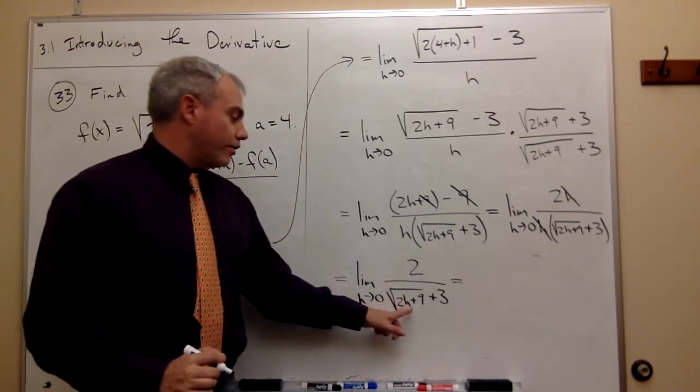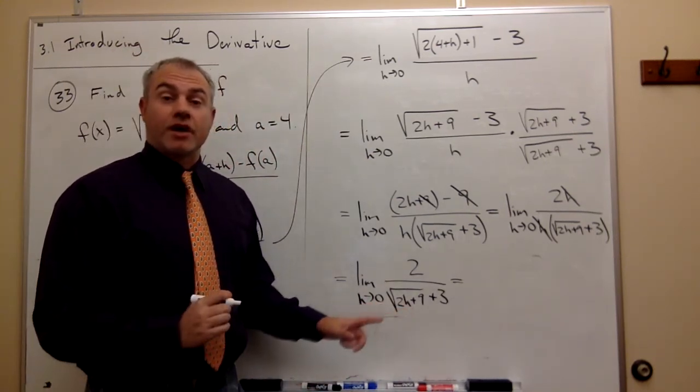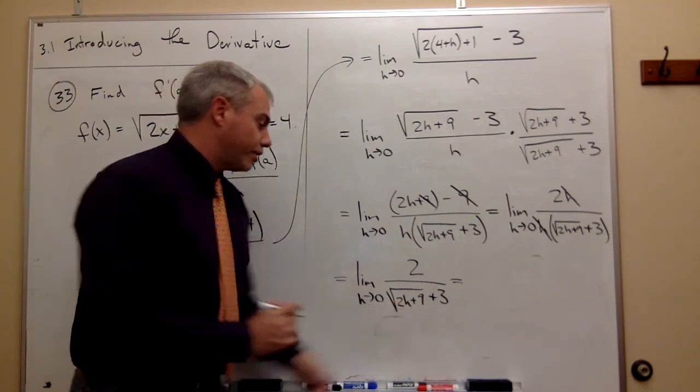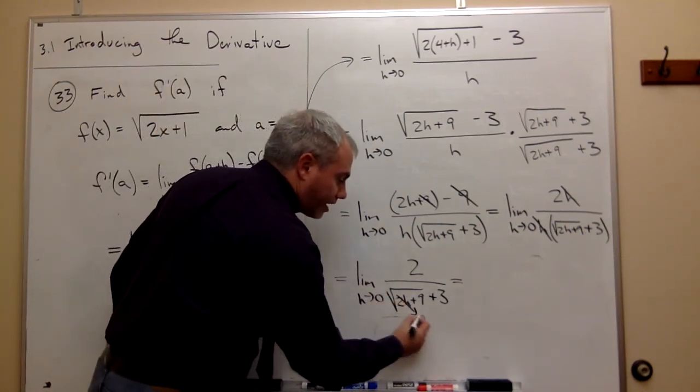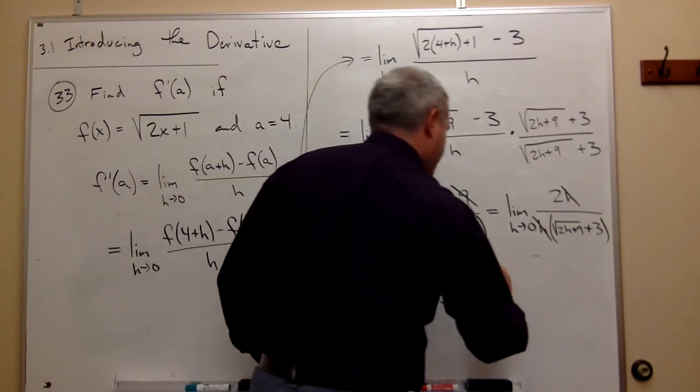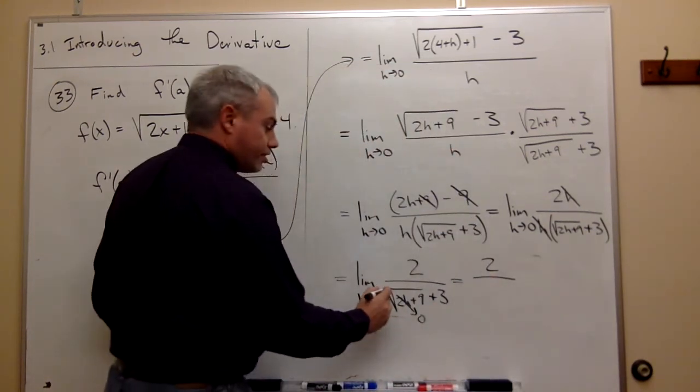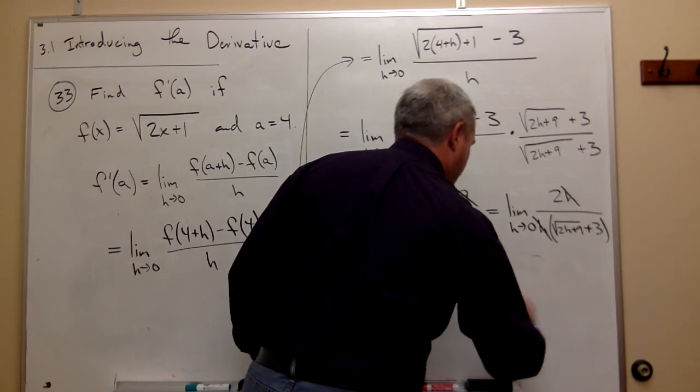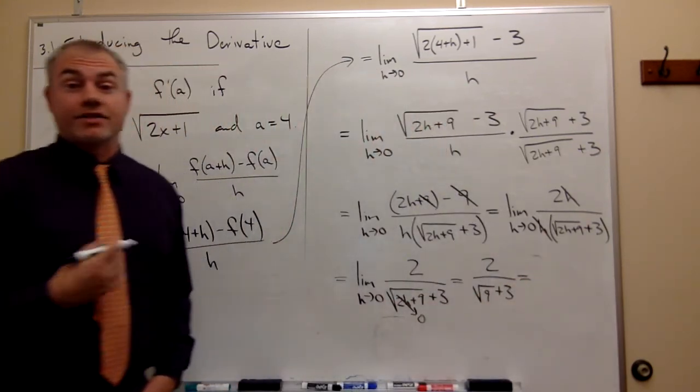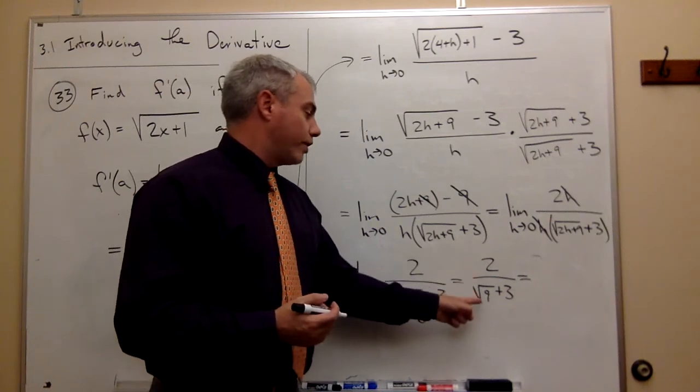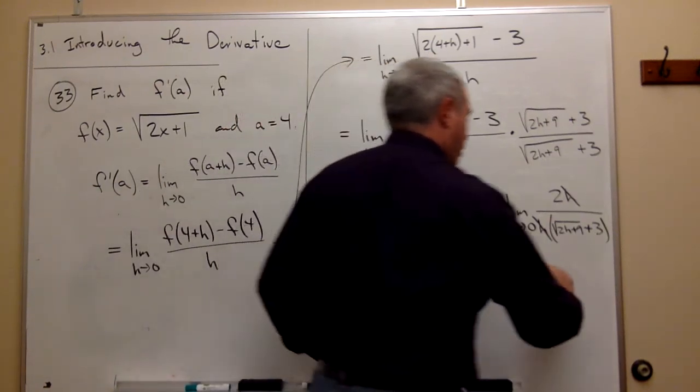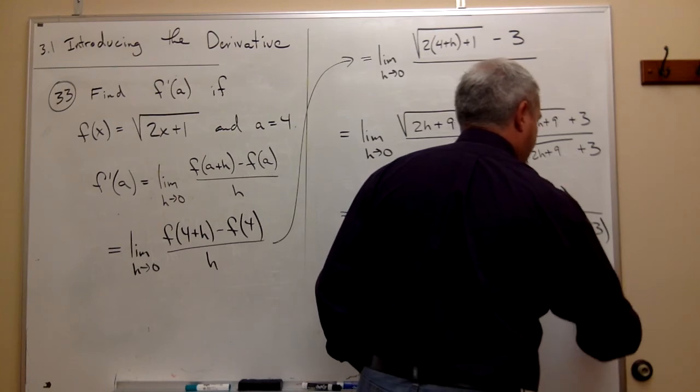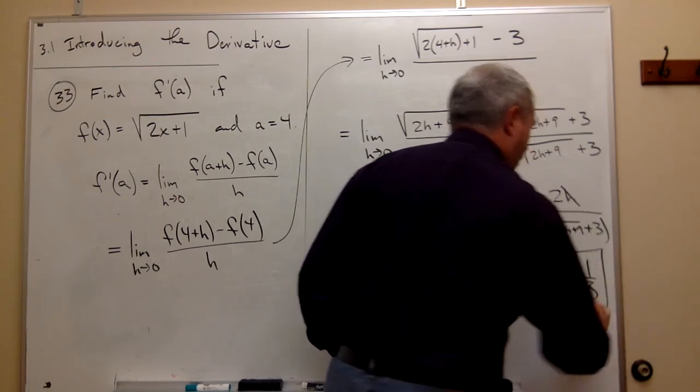As h goes to 0 this is perfectly fine. It doesn't cause division by 0 at all so go ahead and plug in 0 for this h. That means that this whole thing becomes 0 and I'm left with 2 over the square root of 9 plus 3. So this is 2 over 3 plus 3 or 2 over 6 otherwise known as 1 third.